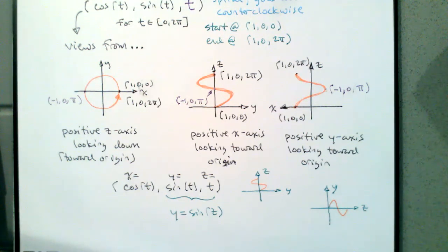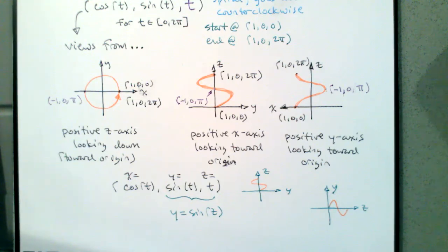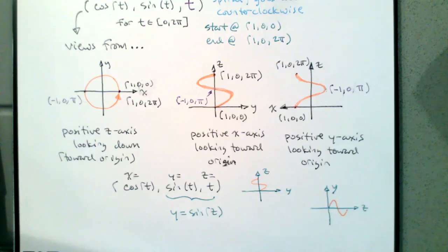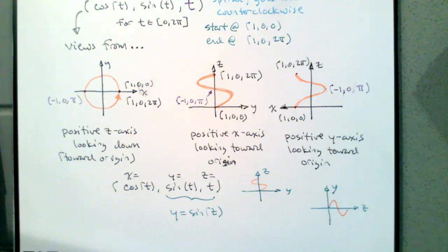One of the reasons we start with functions and drill them so hard is that functions are the easiest case. Dealing with curves and representing them as functions gives us something we can rely on — we always put inputs on the horizontal and outputs on the vertical. Now that we're taking that away, life is going to become more difficult. But that makes sense: we have more freedom to describe things, more ways to do it, and that means more choices to make.